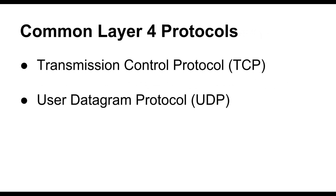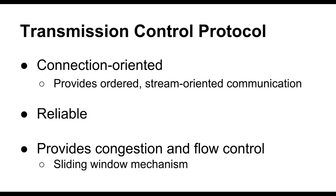There are two extremely common transport layer protocols in widespread use: the Transmission Control Protocol, or TCP, and the User Datagram Protocol, or UDP. TCP is a connection-oriented protocol. It provides ordered, stream-oriented communication, meaning whatever information is put into the stream at one end should come out of the stream intact at the other end.